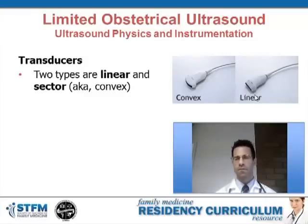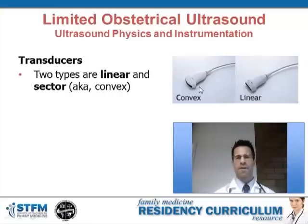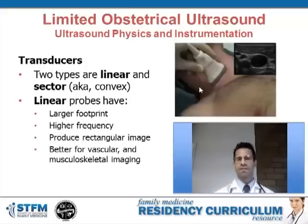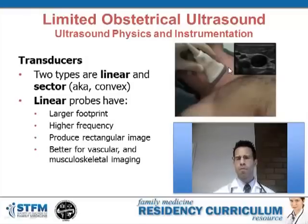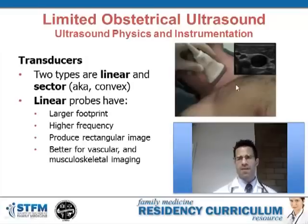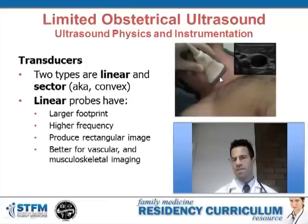There are two types of transducers used in clinical ultrasound imaging: the linear probe and the convex probe. The linear probe has a flat footprint that is larger than the convex probe, meaning it takes up more surface area on the skin. Linear probes are typically higher frequency, produce a rectangular-shaped image, and are better for vascular imaging and musculoskeletal imaging.